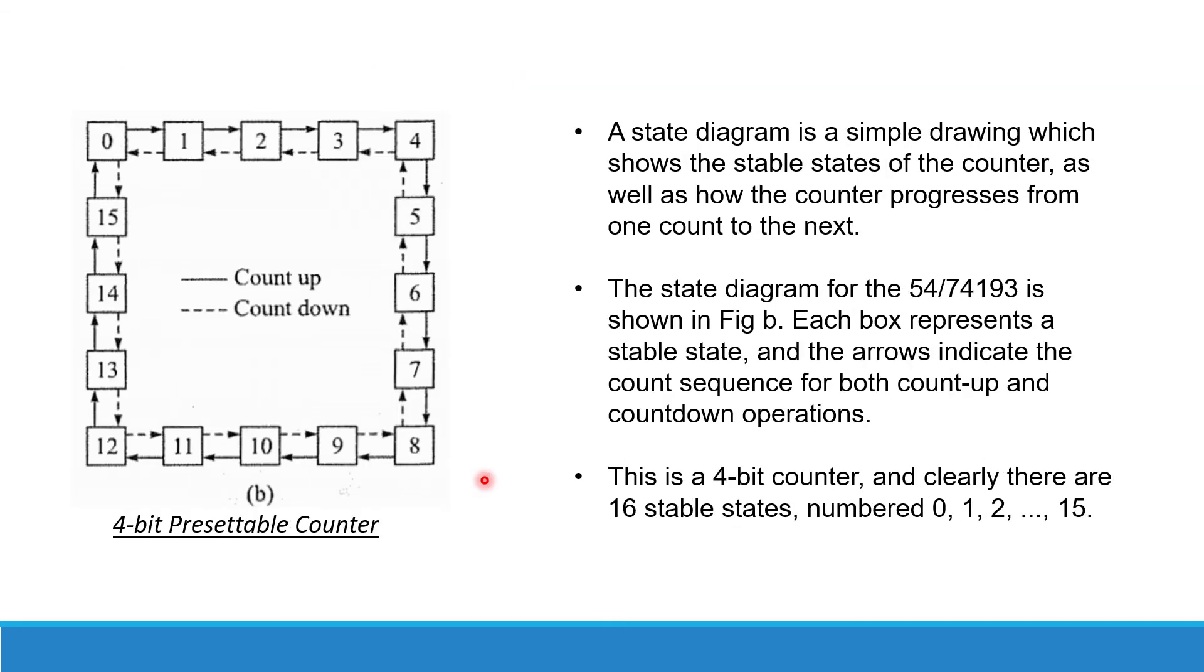Now, the state diagram is a simple drawing which shows the stable states of the counter as well as how the counter progresses from one count to the next. The state diagram for 54/74193 is shown in figure B.